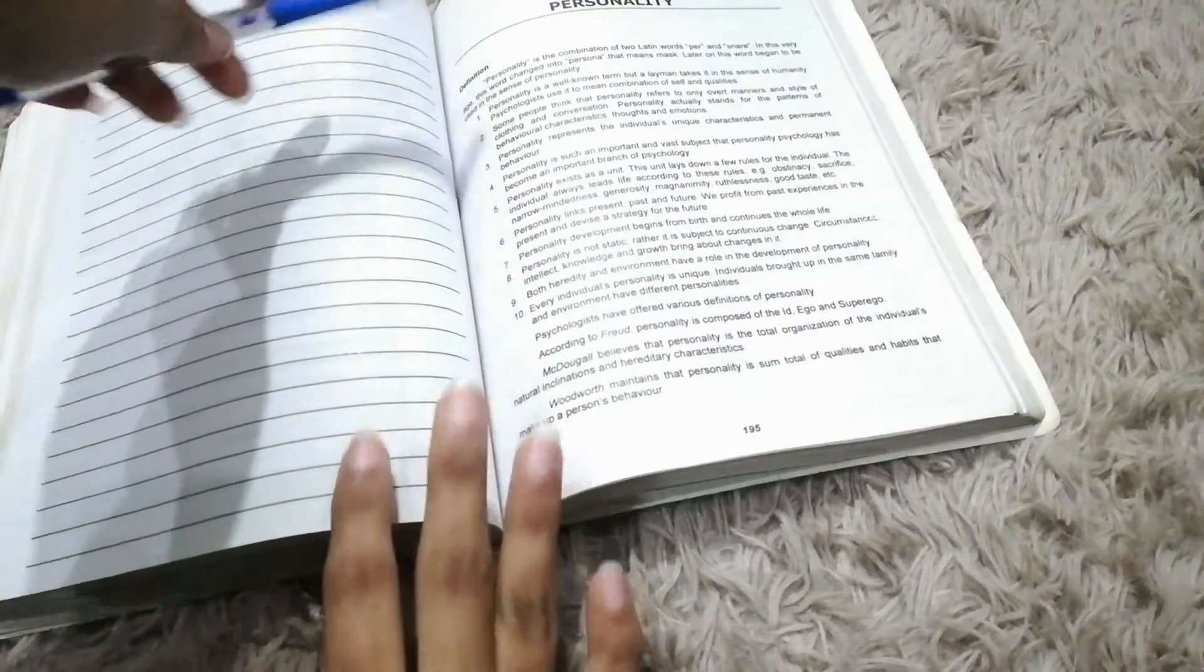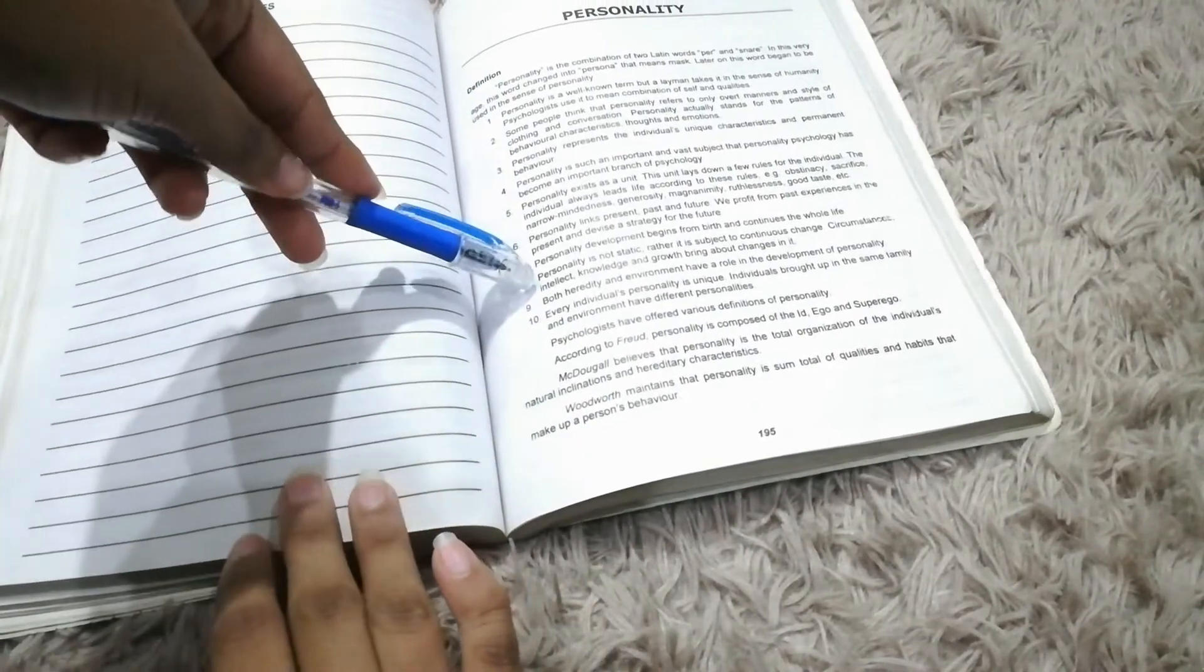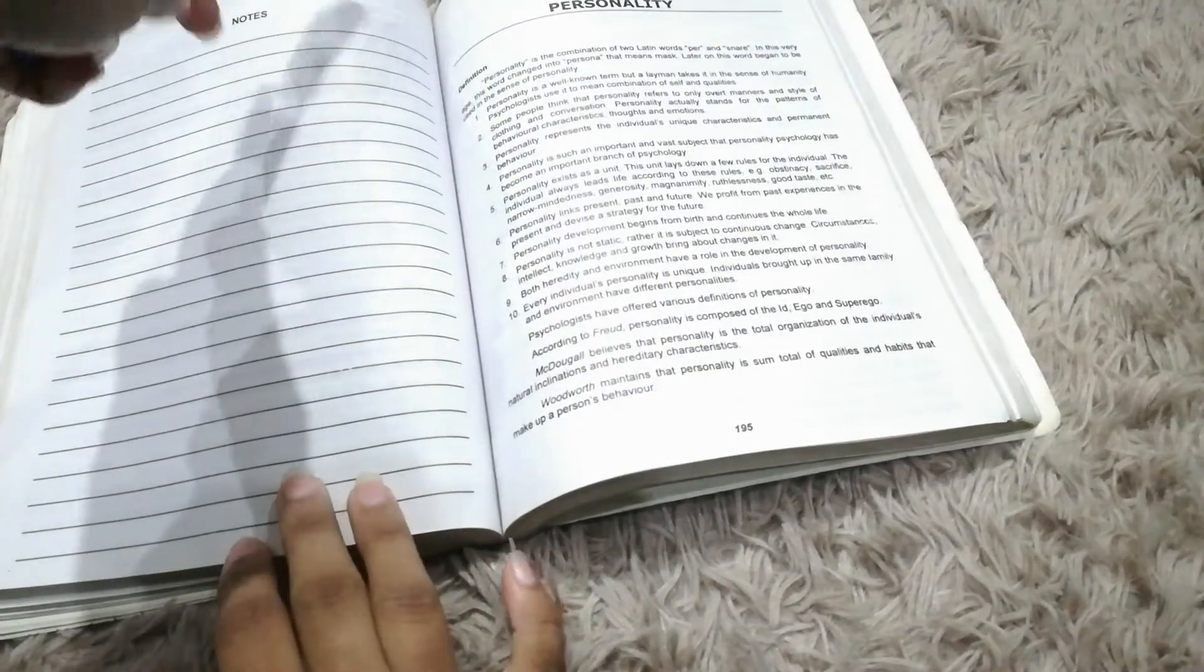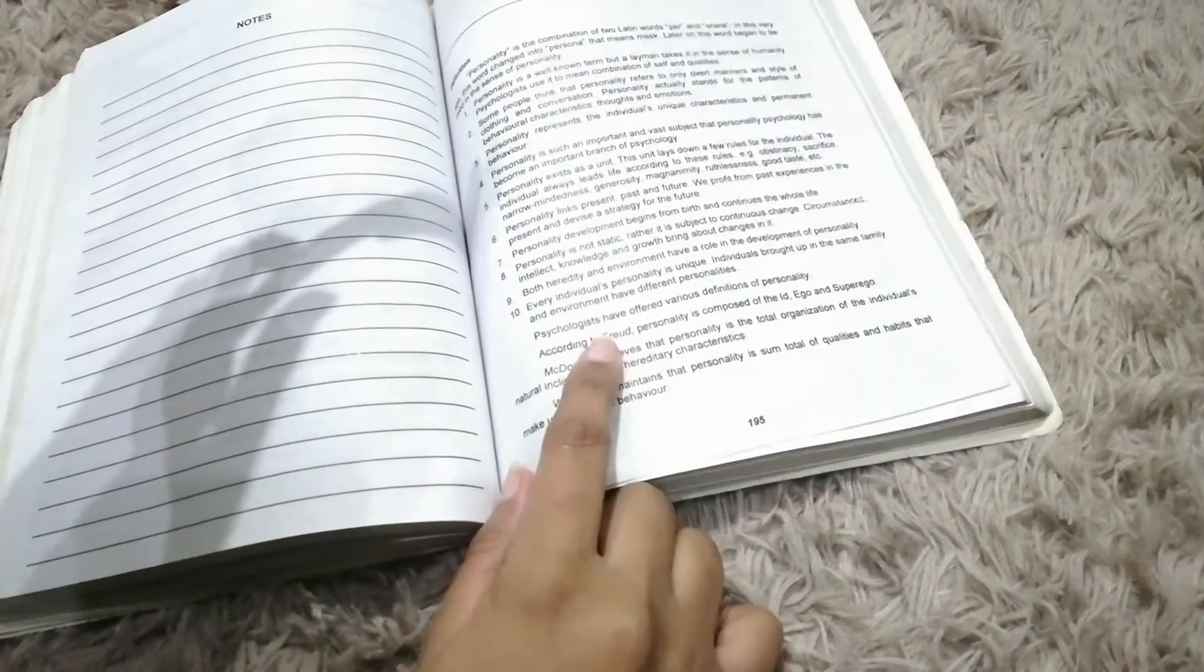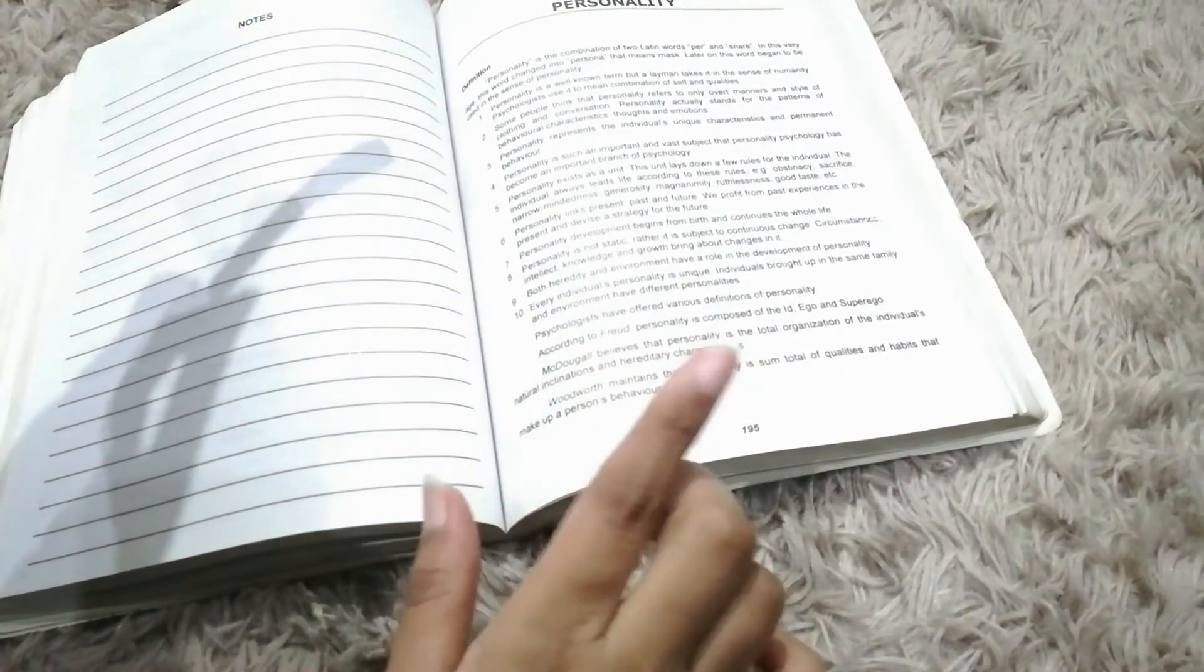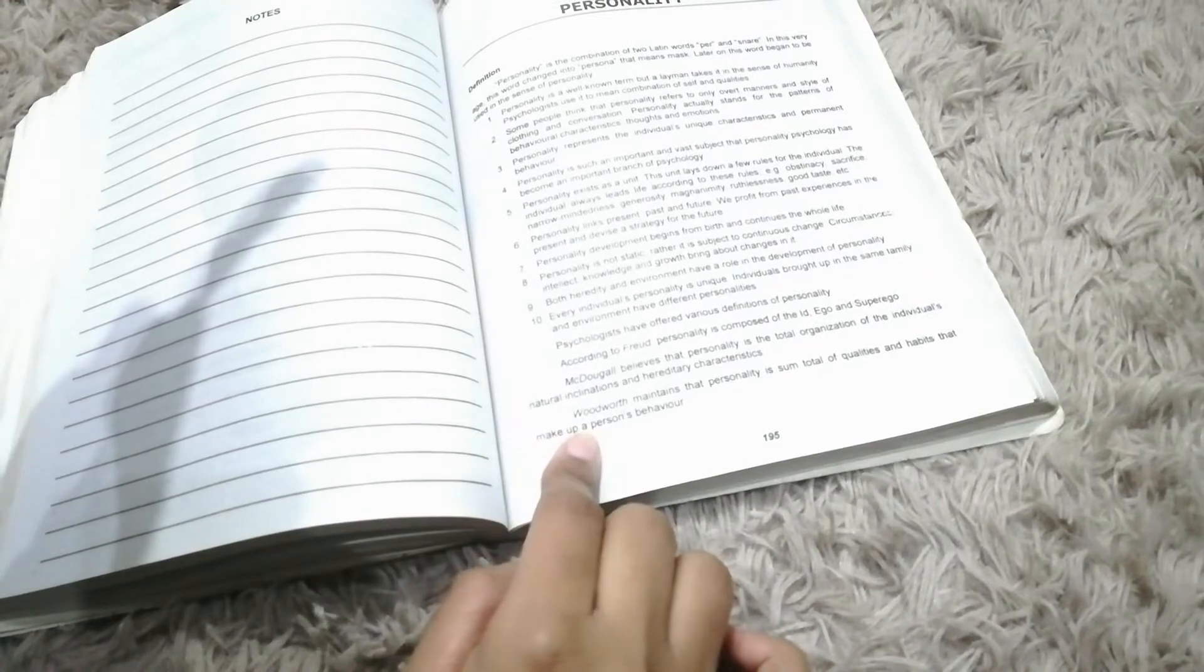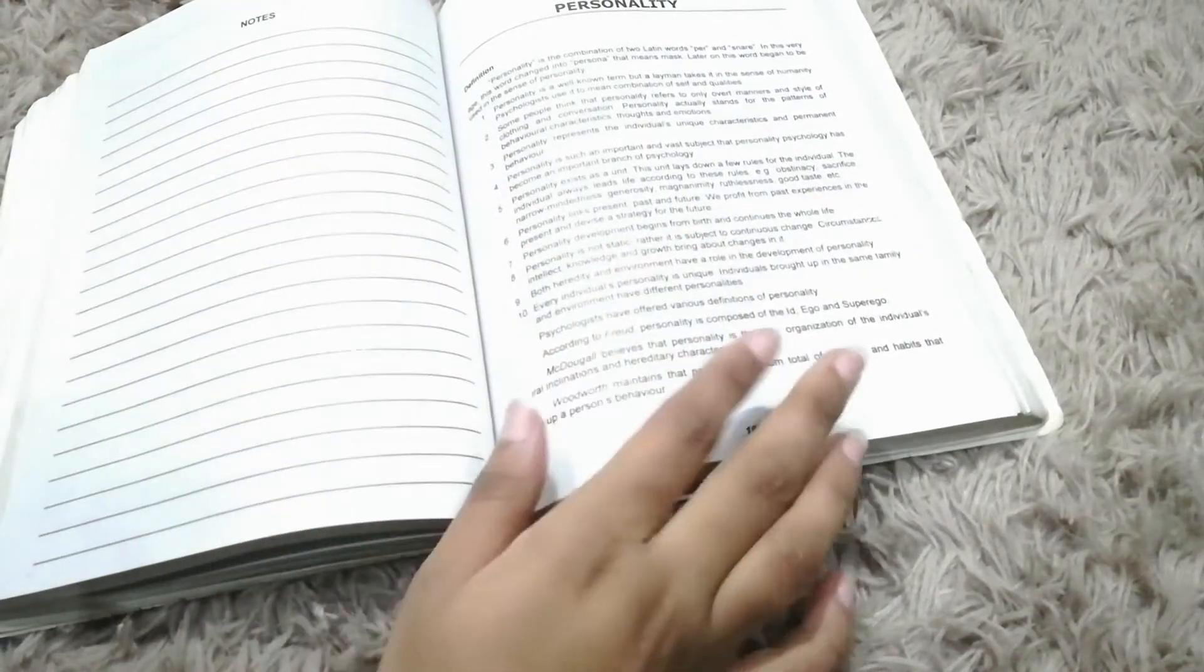And here you have the definition of personality. This is the combination of two words. This is why you should have come and what is the fruit. This is the important text and it will be read once.